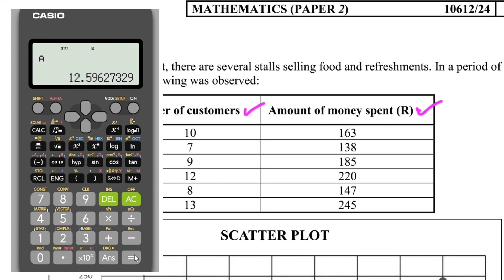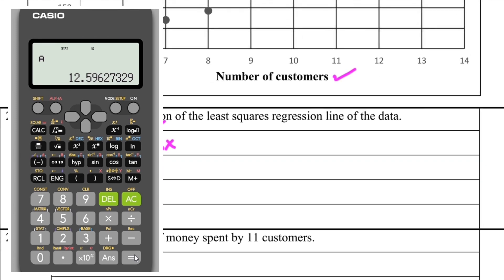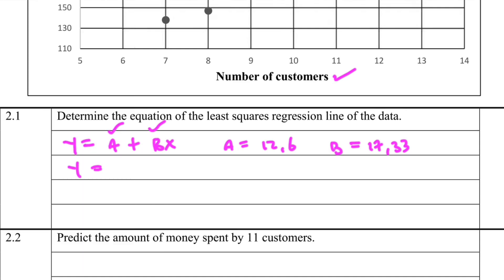When I do that, I get 12.5962. If we're rounding up to two decimal places, we can just say 12.6. So now I can see that a is equal to 12.6. And then what is the value of b? Let's go ahead and find out. I press AC, shift 1, and then I press 5 again for regression, and then 2 so that I can get the value of b. When I press equals, 17.329. To two decimal places we're going to get 17.33. So we have the value of a, we have the value of b. So y equals 12.6 plus 17.33x.